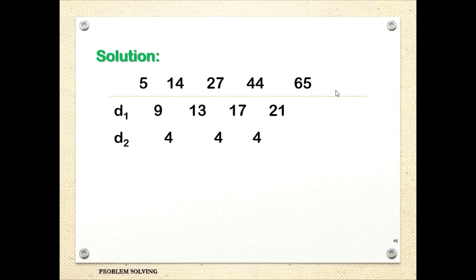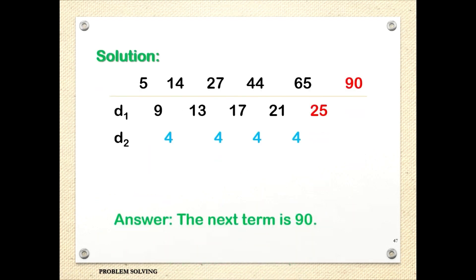Going up, we just add. The pattern tells us the next difference must also be 4. So 21 plus 4 is 25. Then 65 plus 25 is 90. Therefore, the next term is 90.